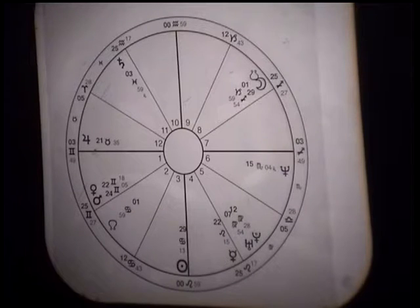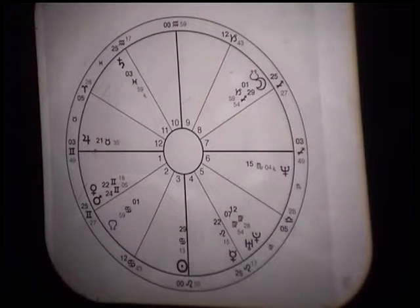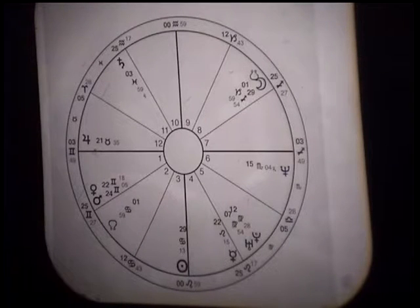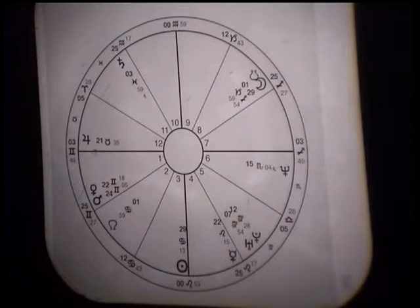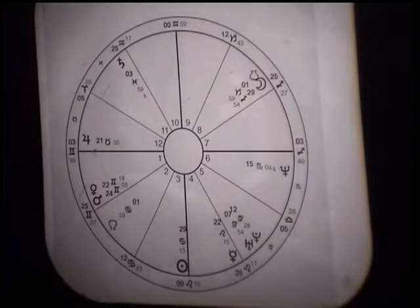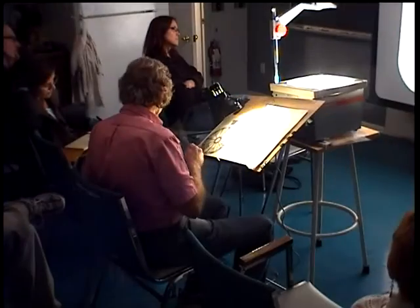Mercury is square to Jupiter, showing excess and potential trouble. The sun is essentially unaspected except for a quincunx to the moon. This indicates her problem might be that she overdid talents — when she came to rebirth, she put everything into developing all of these talents and nothing into self-knowing or self-understanding.